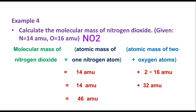Nitrogen dioxide has the molecular formula NO2, consisting of one nitrogen atom and two oxygen atoms. Atomic mass of one nitrogen atom is 14 amu, and two oxygen atoms is 2 × 16 = 32 amu. Therefore the molecular mass of NO2 is 14 + 32 = 46 amu.